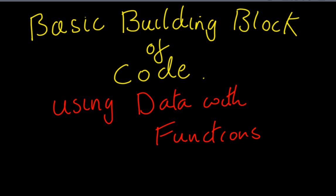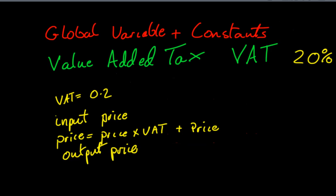Well, hello and welcome to another basic building block of code. This is a follow-up from your functions introduction, and it's about using data with the functions. Now, what we're looking at is a global variable and constants are the kind of things that work for the whole program. In this case, let's look at a constant, which is value-added tax.